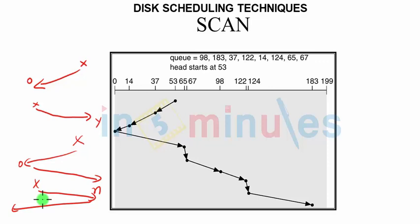In this SCAN example, we have head at 53 moving towards 37, so we will be addressing first 37 followed by 14. Now understand one thing: we are not going to stop, but we would reach to the boundary that is 0. After that we will go in the reverse direction.